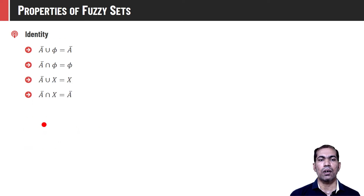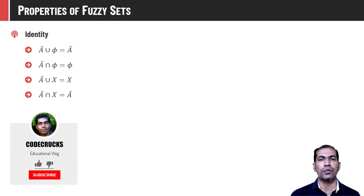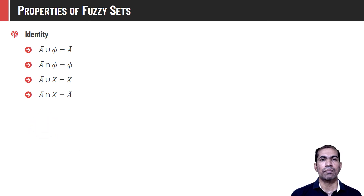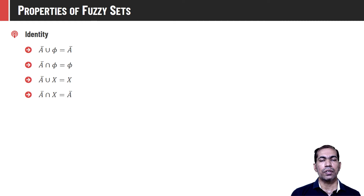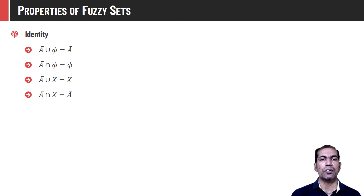Fuzzy sets have the property of identity — that is, A union phi equals A. Union of phi with any set will be the set itself, and intersection of phi with any set will be phi, so A intersection phi equals phi. Union of any set with the universe of discourse is the universe itself, and intersection of any set with the universe is the set itself — so A union X equals X, and A intersection X equals A.